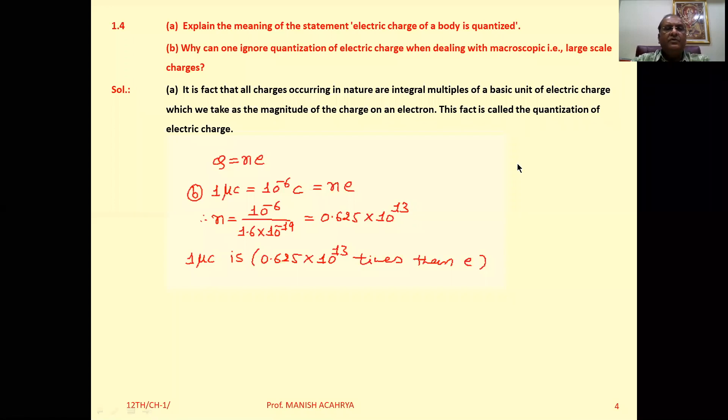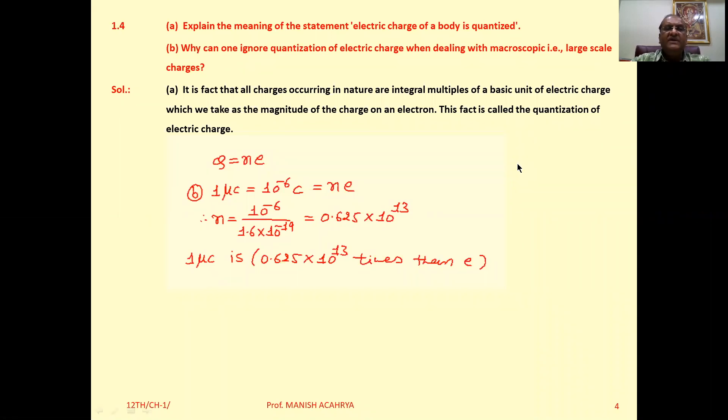Example 1.4(a): Explain the meaning of the statement 'electric charge of a body is quantized.' This implies that in nature, the charge available is always an integer multiple of some fundamental charge, and experimentally we can observe this.